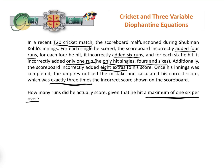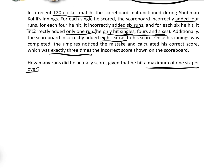This is going to be a Diophantine equation in three variables. We know it's going to be Diophantine because Shubman-Cohley can't score half a run, or half a four, or a quarter of a six. So the number of singles, fours, and sixes that he scored is going to be a positive integer. Let's get the equation out. Let X be the number of singles, Y be the number of fours, and Z be the number of sixes.